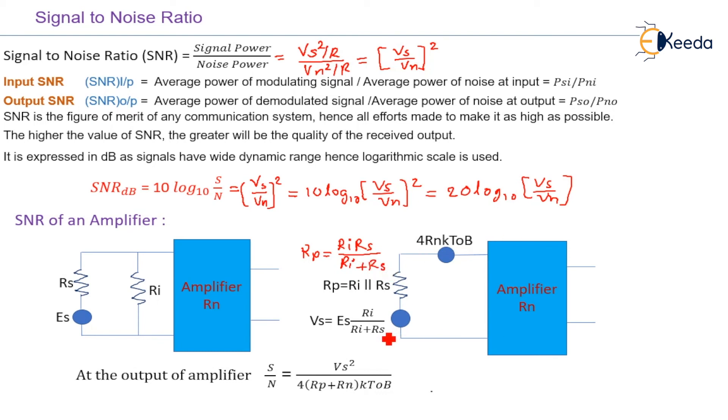So Vs equal to Es. Here voltage divided is applied. Vs equal to Es, Ri divided by Ri plus Rs. Here 4 times Rn.